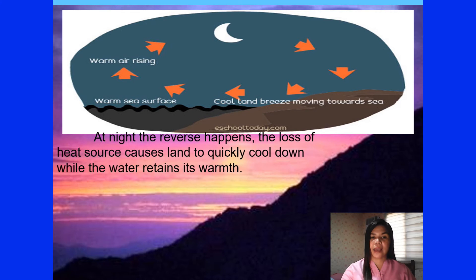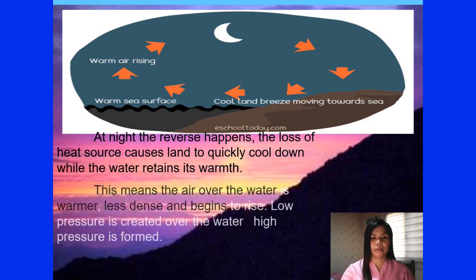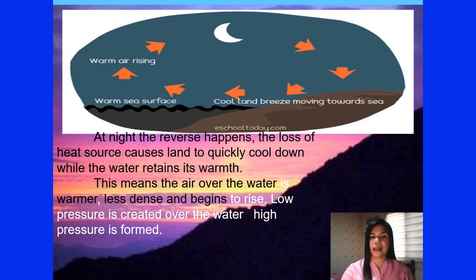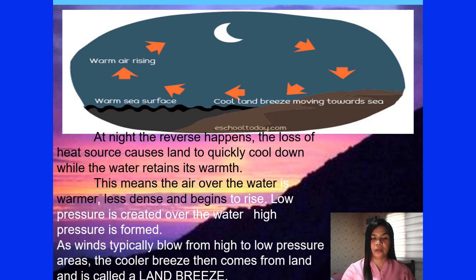At night, the reverse happens. The loss of the heat source causes land to quickly cool down, while the water retains its warmth. This means that the air over the water is warmer, less dense, and begins to rise. Low pressure is created over the water, while high pressure is formed over land. As winds typically blow from high to low pressure areas, the cooler breeze then comes from land — that's called a land breeze.